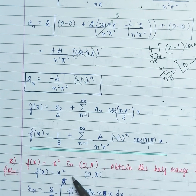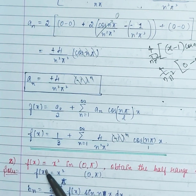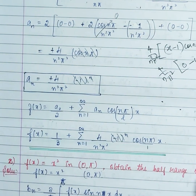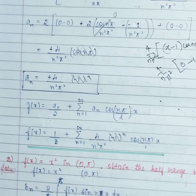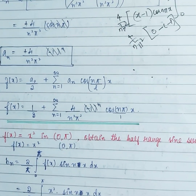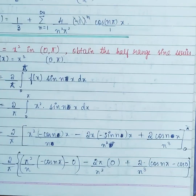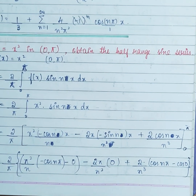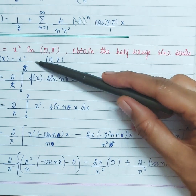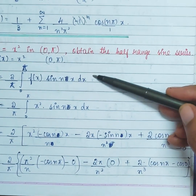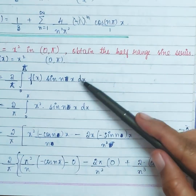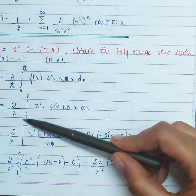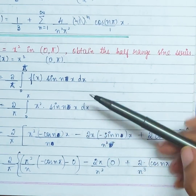Coming to the next question — this is easy, try to solve it on your own. f(x) = x² on [0, π]. Obtain half range sine series. Sine series means connect it to an odd function, so we have only BN. BN = 2/π · integral from 0 to π of f(x)·sin(nx) dx = 2/π · integral from 0 to π of x²·sin(nx) dx.